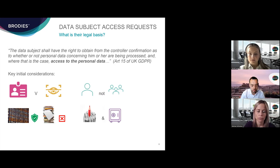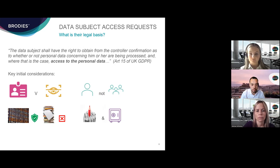Another point to note is that the right of access is a right to information and not specifically documents. In practice, it may be easier to provide requesters with copies of original documents, sometimes with redactions applied to remove information that is not about them, but you're not obliged to do so. A requester is only entitled to ask for a copy of their own information — the right of access cannot be used to obtain information about third parties.